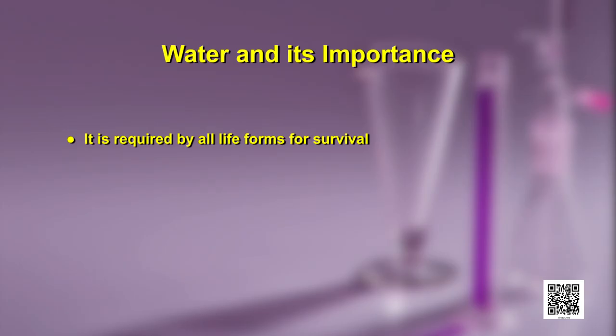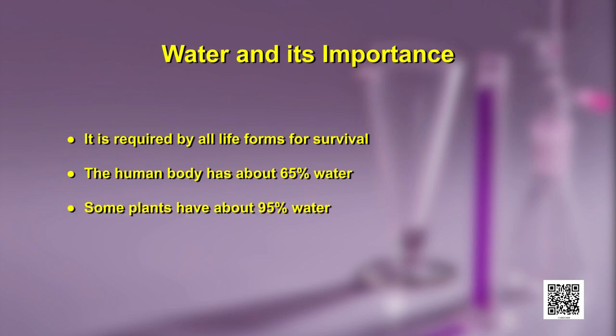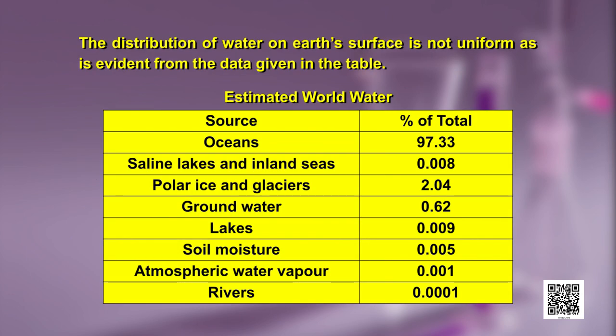You are all familiar with water and its importance. It is required by all life forms for survival. The human body has about 65 percent water and some plants have about 95 percent water. Water is a great solvent. The distribution of water on earth's surface is not uniform, as evident from the data given in the table. In oceans, it is 97.33 percent.